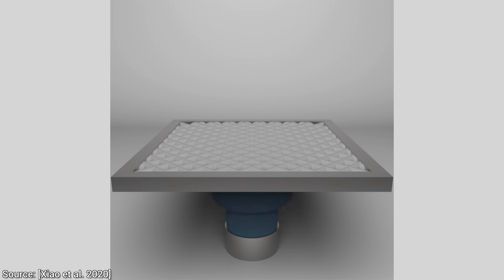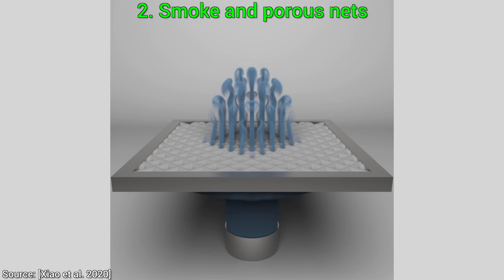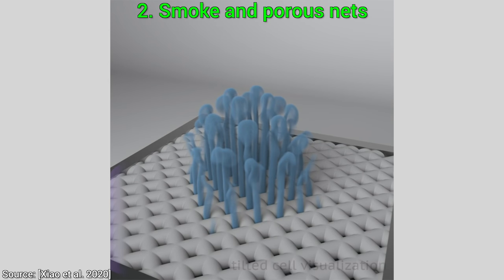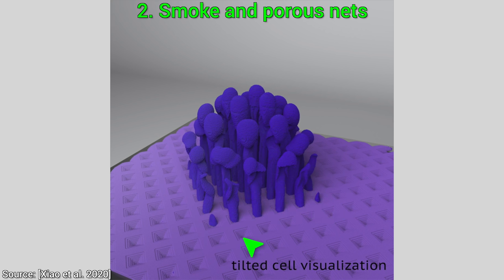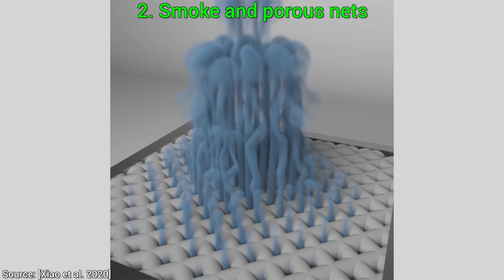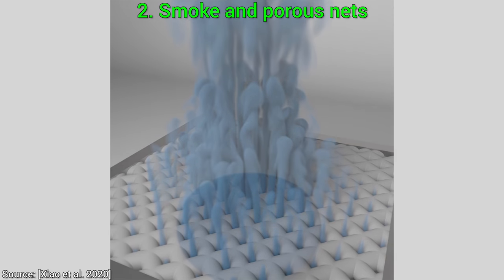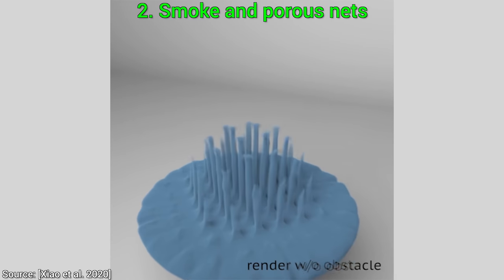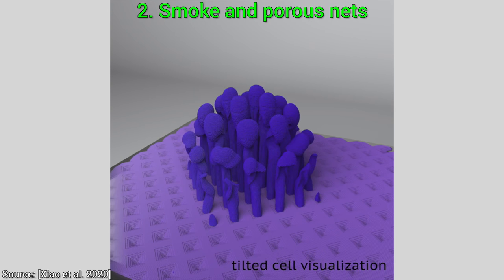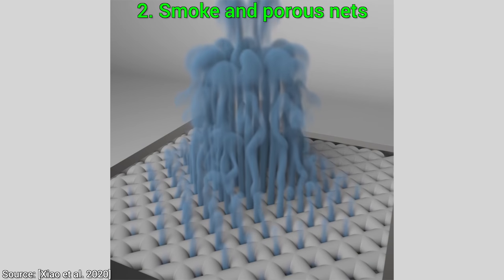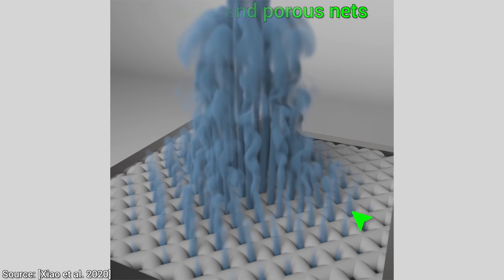Experiment number two: smoke plumes and porous nets. This technique refines the grids with these tilted grid cells in areas where there is a great deal of turbulence. And — wait a second — what is this? The net is also covered with tilted cells. Why is that? The reason is that the tilted cells not only cover turbulent regions, but other regions of interest as well. In this case, it enables us to capture this narrow flow around the obstacle. Without this new AST grid, some of these smoke plumes wouldn't make it through the net.